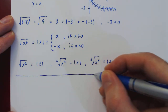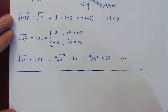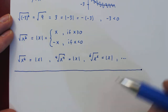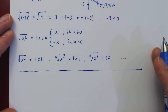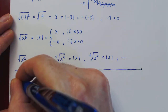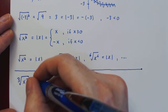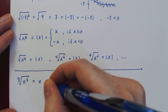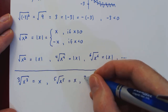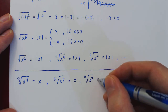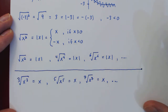Do we have to worry about absolute value for an odd root of the corresponding odd power? The answer is no. An odd power of a positive remains positive, and an odd power of a negative is also negative — and the same is true of odd roots. So dealing with odd roots of odd powers is simpler: the cube root of x cubed is always x, the fifth root of x to the fifth is always x, and the seventh root of x to the seventh is always x — and so on for any odd root of the corresponding odd power of x.